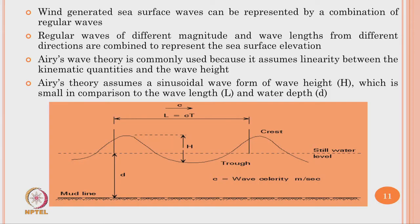Wind-generated sea surface waves can be represented by a combination of different regular waves. Regular waves of different magnitudes and wavelengths from different directions are combined to represent the sea surface elevation. Airy wave theory is most commonly used as a preliminary theory because it assumes linearity between the kinematic quantities and the wave height. Airy theory assumes a sinusoidal form, where h is the wave height from crest to trough, which is small in comparison to the wavelength.